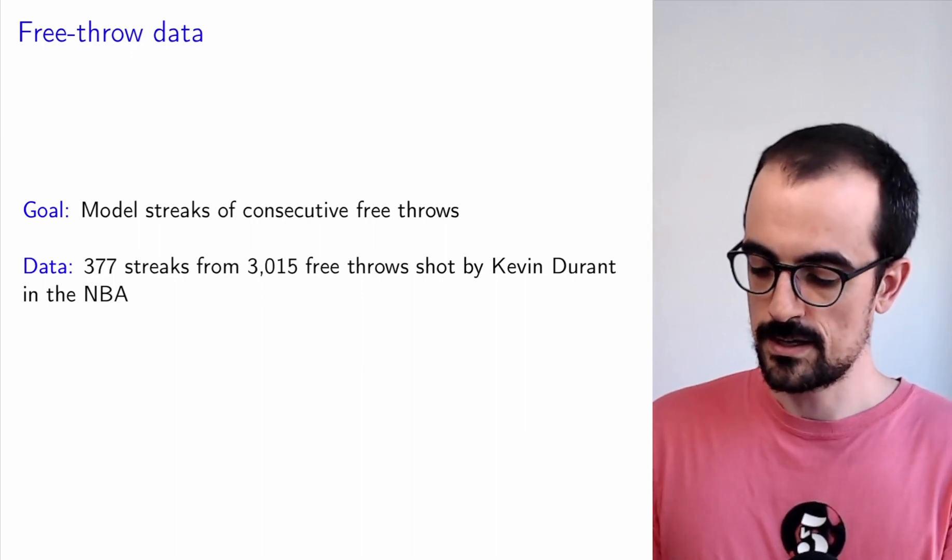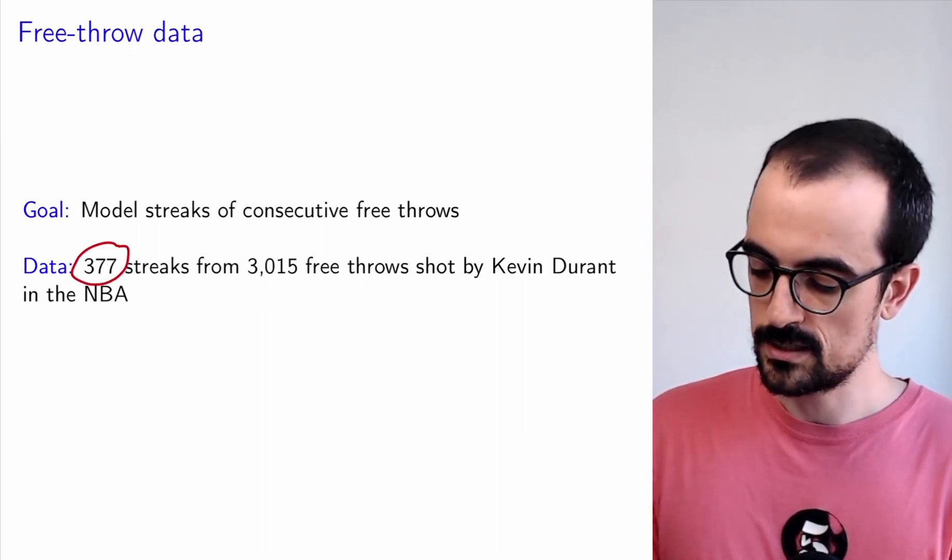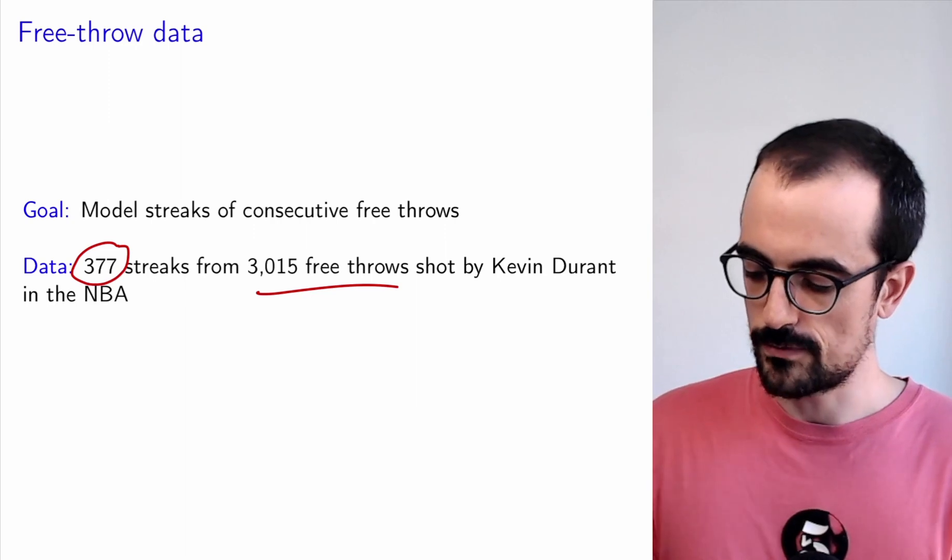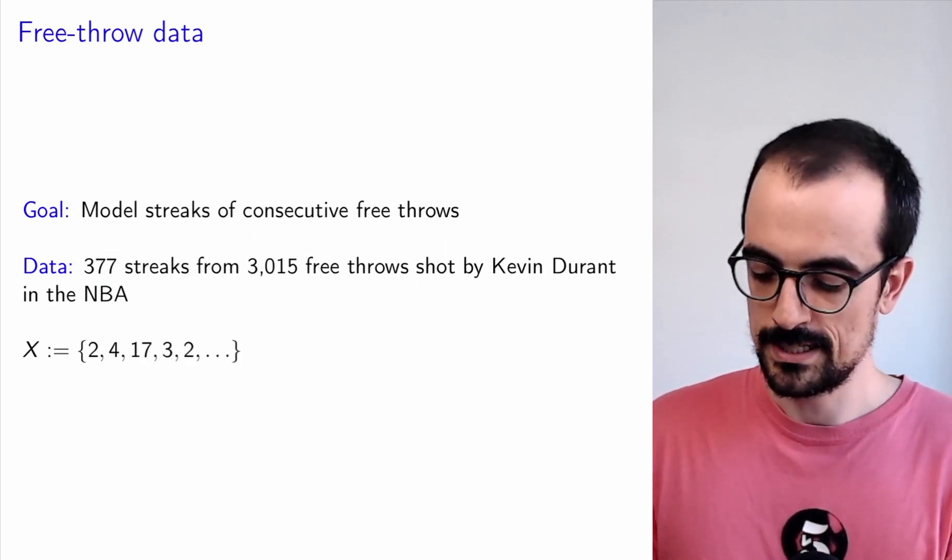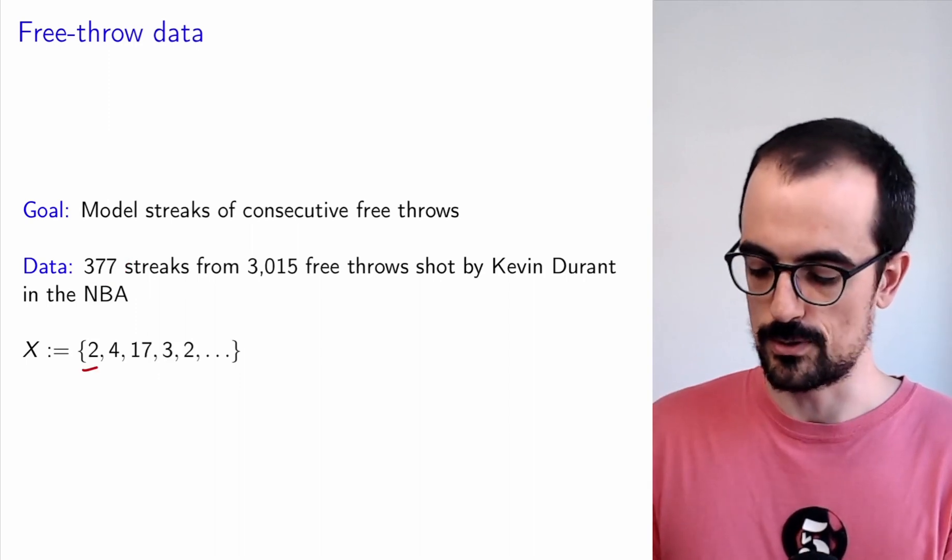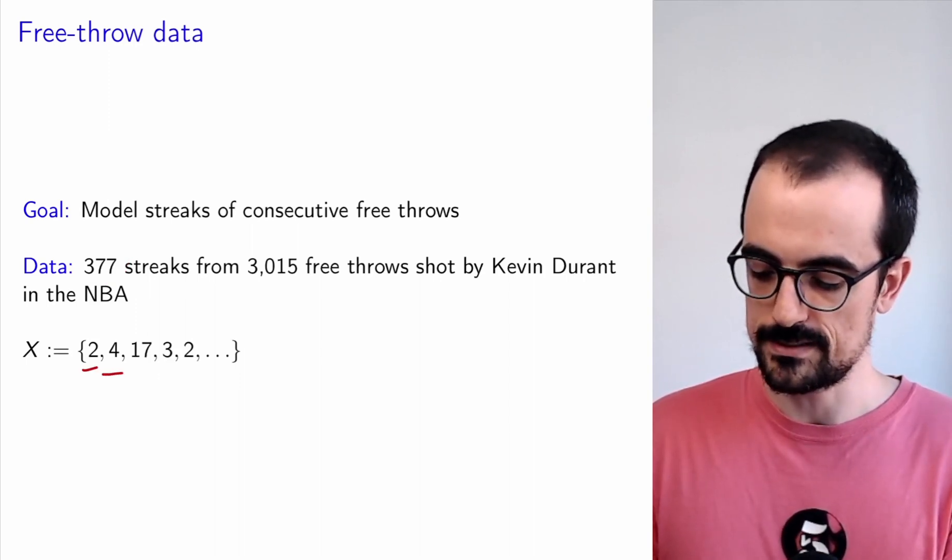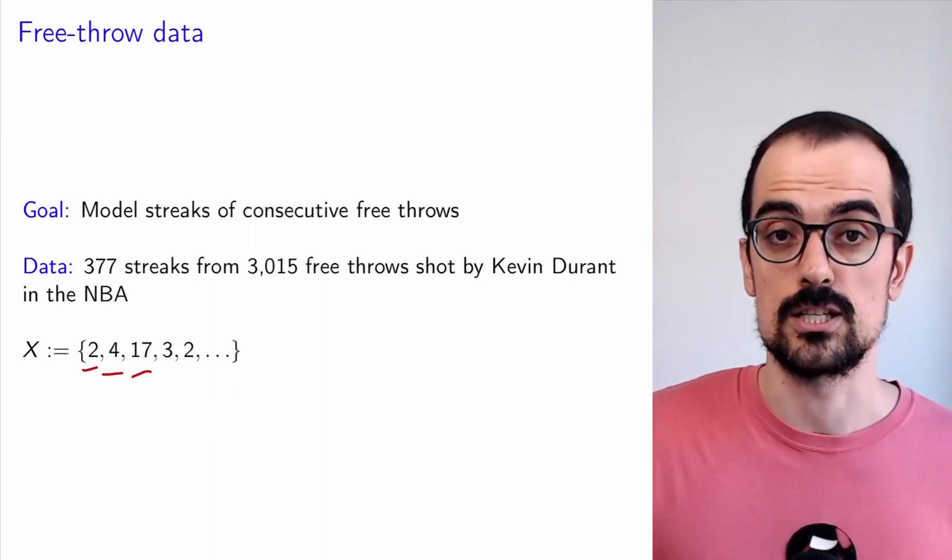Our data look like this. We have 377 streaks from a total of 3,015 free throws. As an example, here he made two free throws and then missed, four free throws and then missed, 17 free throws and then missed, and so on and so forth.